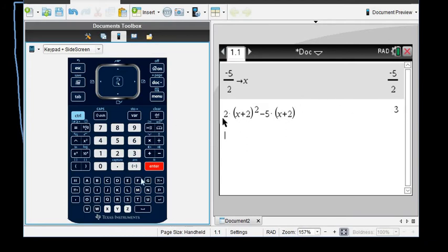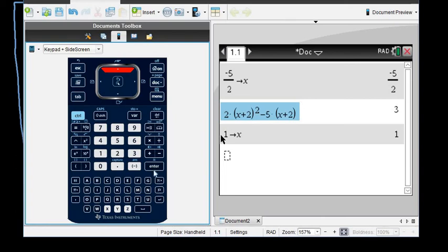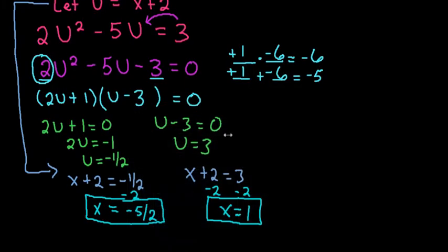The negative 5 halves does work. We have to check our second answer, which remember was 1. So I would take 1 and I would store that for x. And then instead of retyping in the whole thing, I'm going to just come back up here. And I'm going to, once it's highlighted, grab it and hit enter again. And we can see that that also equals 3. So both of our answers do work.